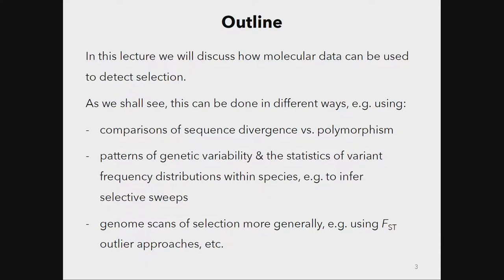We can also work simply within species only — within Homo sapiens or within Drosophila — by using patterns of genetic variability and the statistics of variant frequency distributions within species to infer what we call selective sweeps. I'll explain what selective sweeps are. We can also do genome scans: sequence an entire genome from a bunch of individuals from two different populations that are ecologically interesting, scanning along the genome to see whether you find patterns not easily explained by things other than selection.